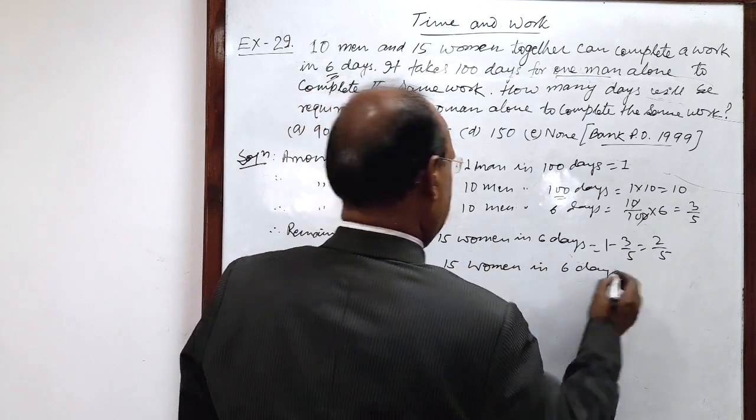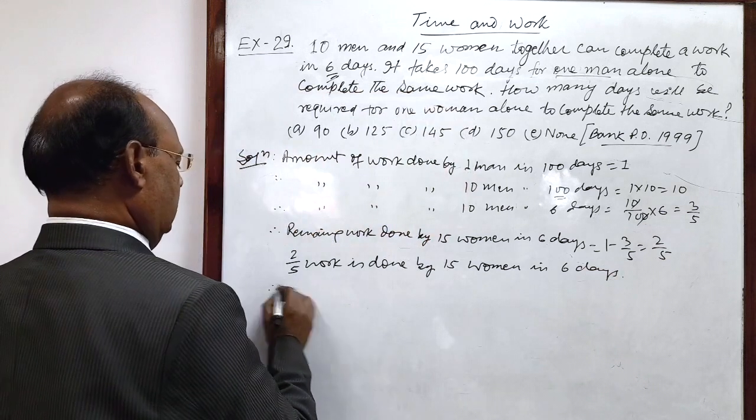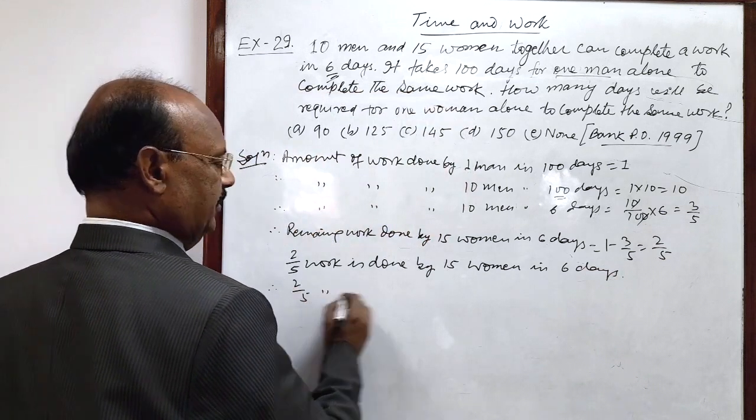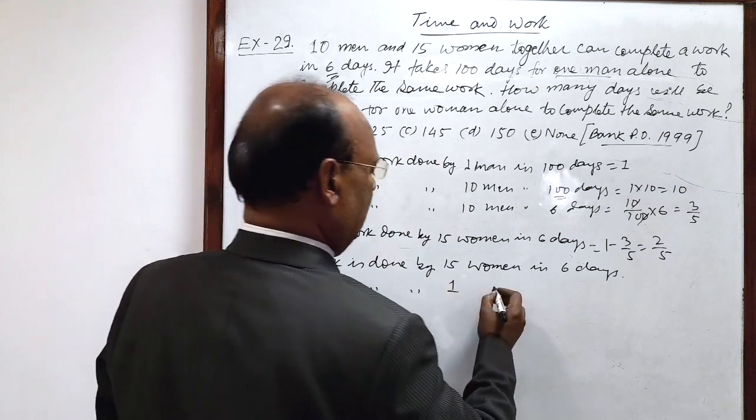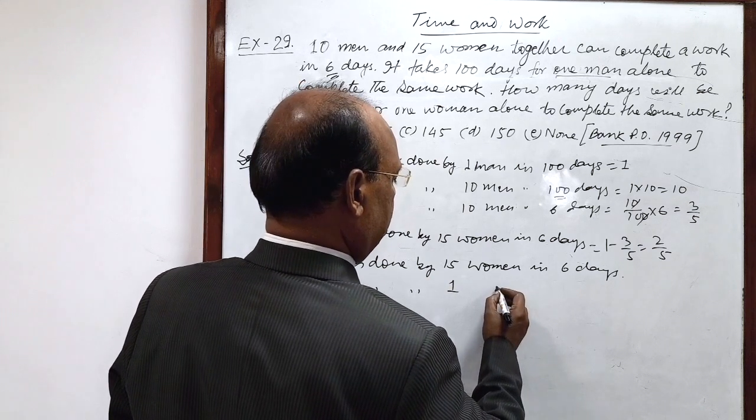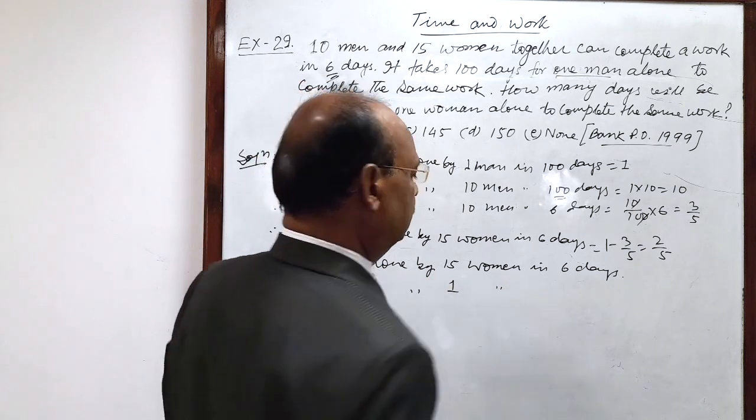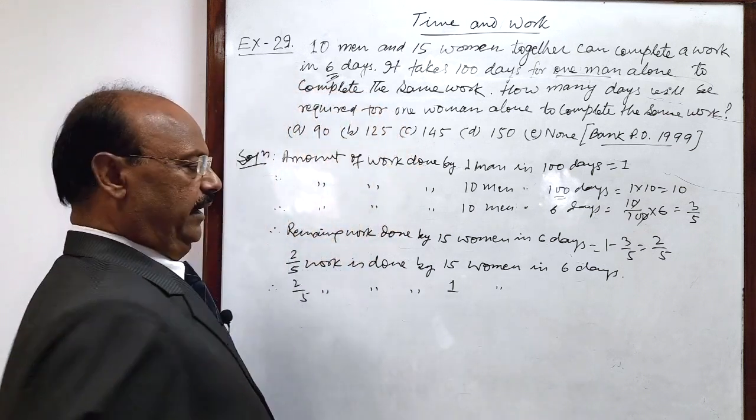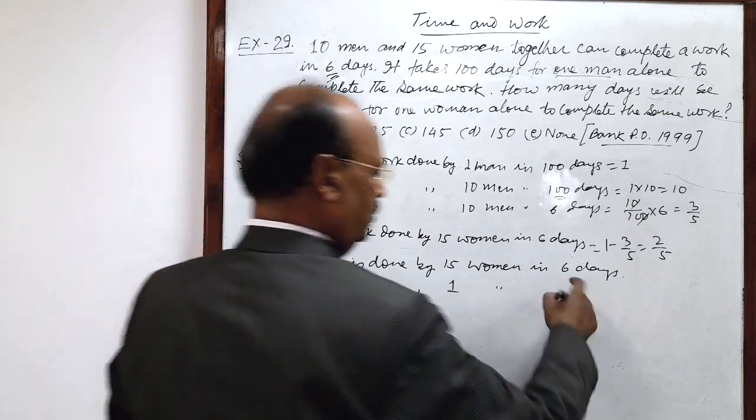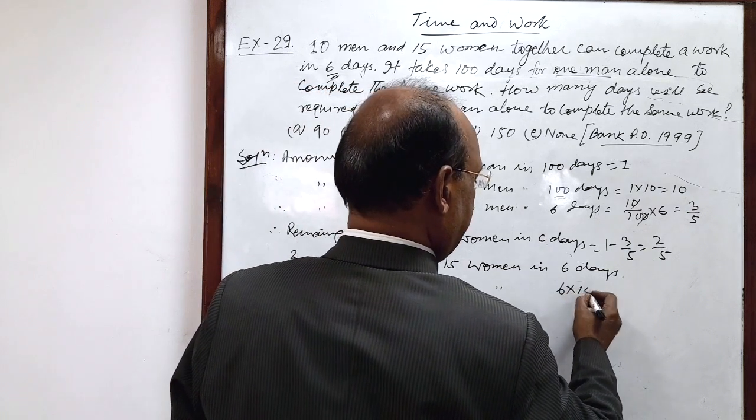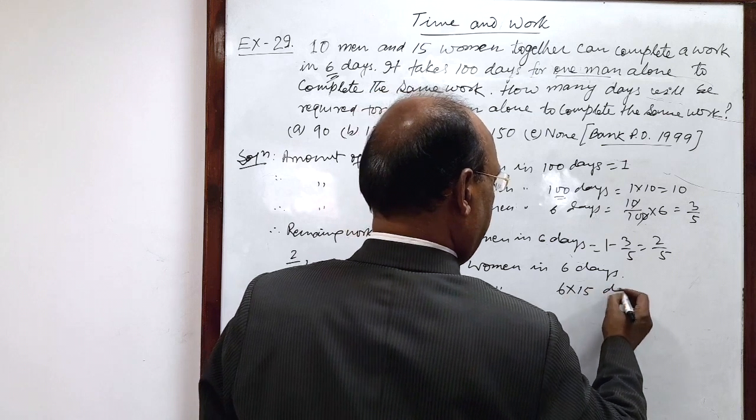Therefore 2 by 5 work is done by 1 woman in how many days? If number of women will be less then number of days will be more, so multiplication 6 into 15 days.